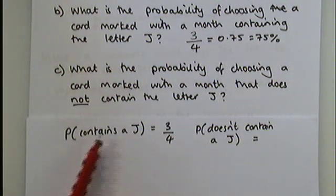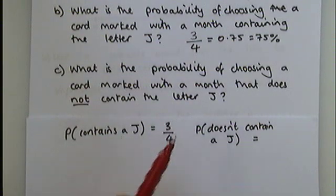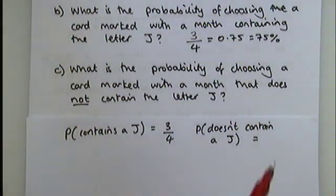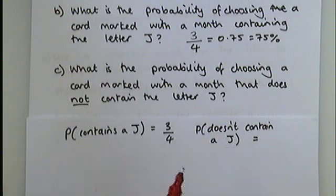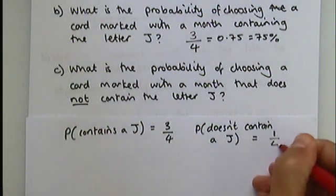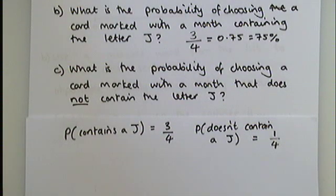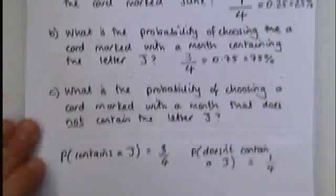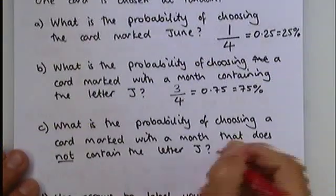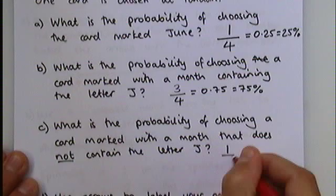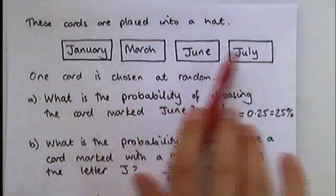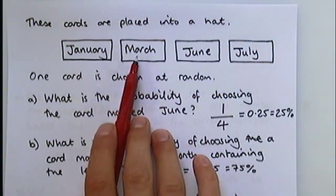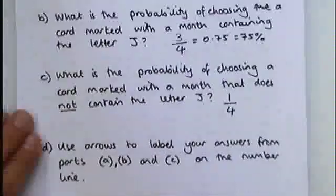So this one here says the number of cards that contain a J is three out of four. The opposite, the number of cards that don't contain a J, will be one out of four. Together, they make up four out of four, or a whole, or a hundred percent. So the answer to this question is one out of four. Again, I will stress, you can do this by just going back to the cards and counting how many do not contain a letter J. There are four cards in total, and this one does not contain a letter J. One out of four.